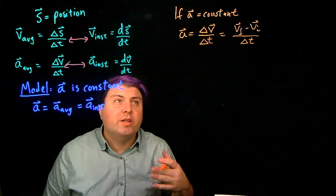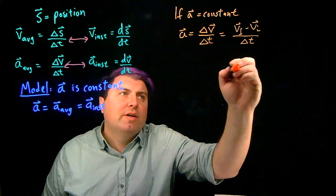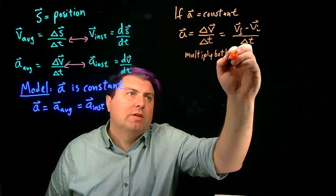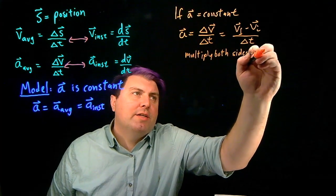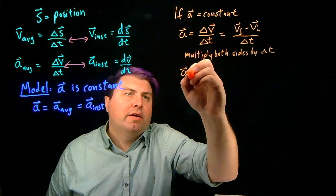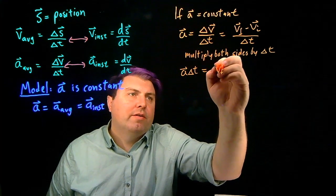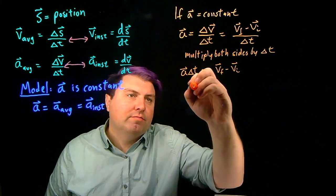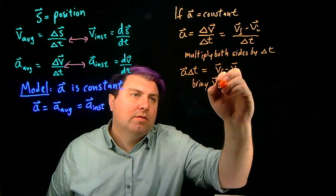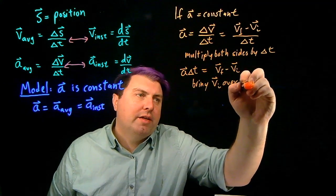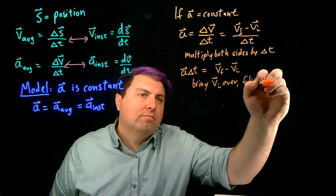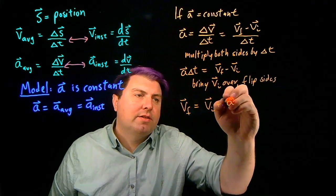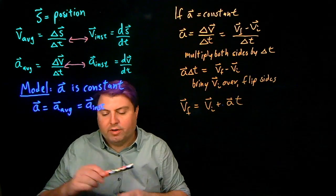So to get to a kinematic equation, we want to solve for v sub f. So we want to multiply both sides by delta t. And so I get a delta t equals vf minus vi. And then I bring vi over and then flip sides. And so I get here vf equals vi plus at, or a delta t.